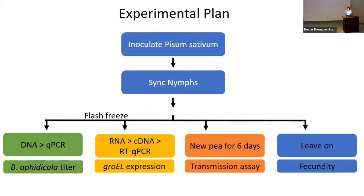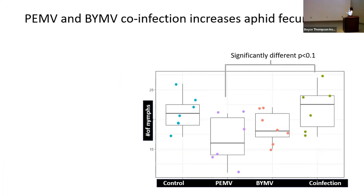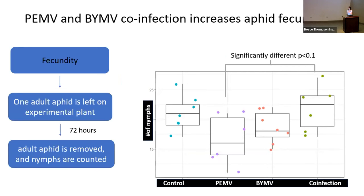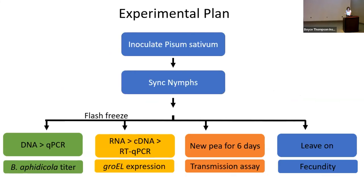For the fecundity assay, we left one adult aphid on the experimental plant and gave it 72 hours to produce as many nymphs as possible, then removed the adult and counted the nymphs by hand. We found that aphids feeding on PMV plants had the lowest number of nymphs, while those on co-infected plants had the highest number — these two were significantly different from one another. This suggests there may be a mechanism behind co-infection that increases aphid survival and fitness.